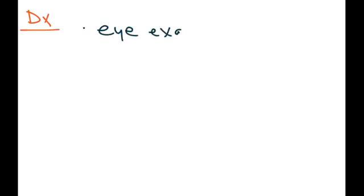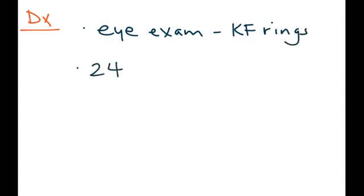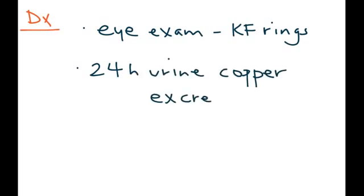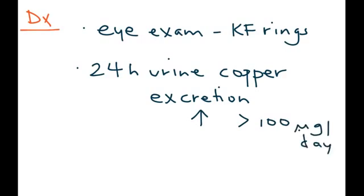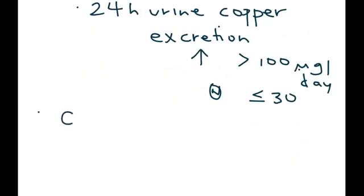The diagnostic workup of Wilson disease involves the eye exam, which will show those Kayser-Fleischer rings. A 24-hour urine copper excretion will be high — greater than 100 micrograms per day; the normal is less than 30. A very important test is a ceruloplasmin level.